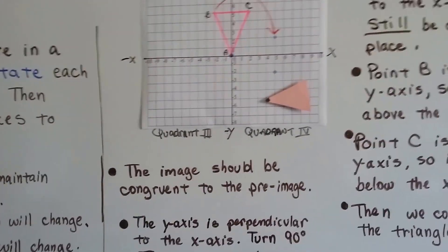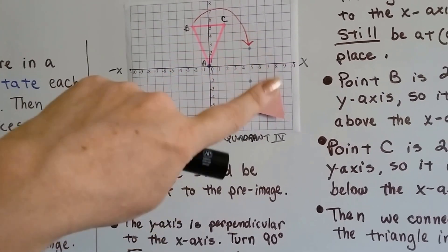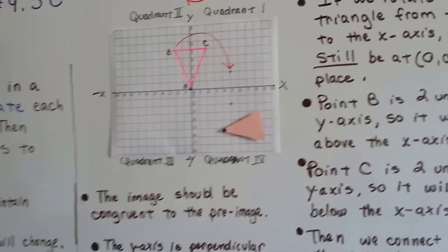The image will be congruent to the pre-image. It's going to be identical. Just its position, its orientation is going to change.